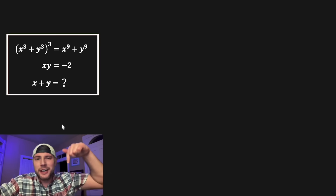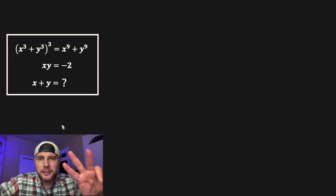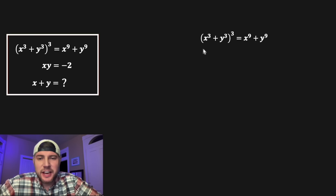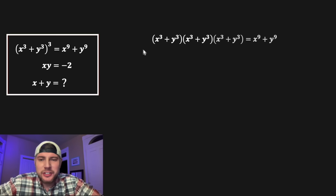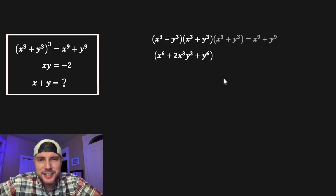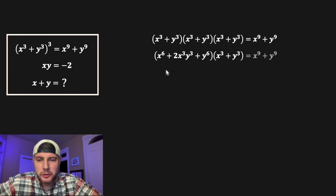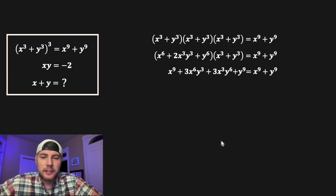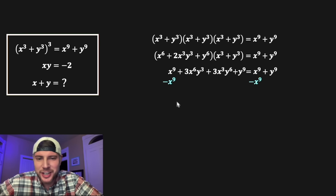Raising this to the third power is the same as multiplying it by itself three times. First, multiplying (x³ + y³) by itself gives us x⁶ + 2x³y³ + y⁶. Then we multiply that result by (x³ + y³) again, which expands out into a longer expression. Then we set the whole thing equal to zero by subtracting x⁹ from both sides.